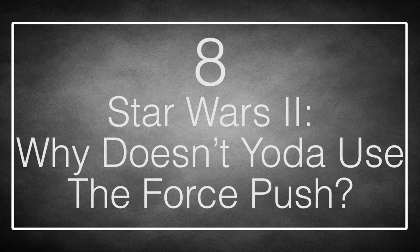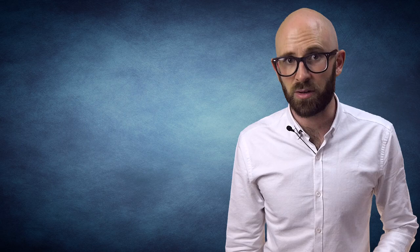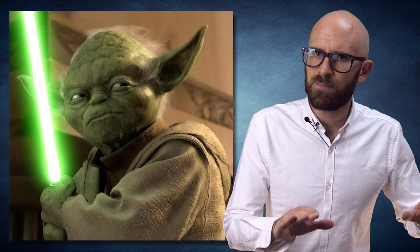Number 8: Star Wars Episode II – Why Doesn't Yoda Use the Force Push? The 900-year-old diminutive Green Dispenser of Wisdom, aka Master Yoda, spends most of the first half of the trilogy telling people to chill. In Star Wars Episode II, however, he tries to eviscerate Saruman using approximately all of the backflips, because apparently Yoda is a deep, complex character who loves to backflip.